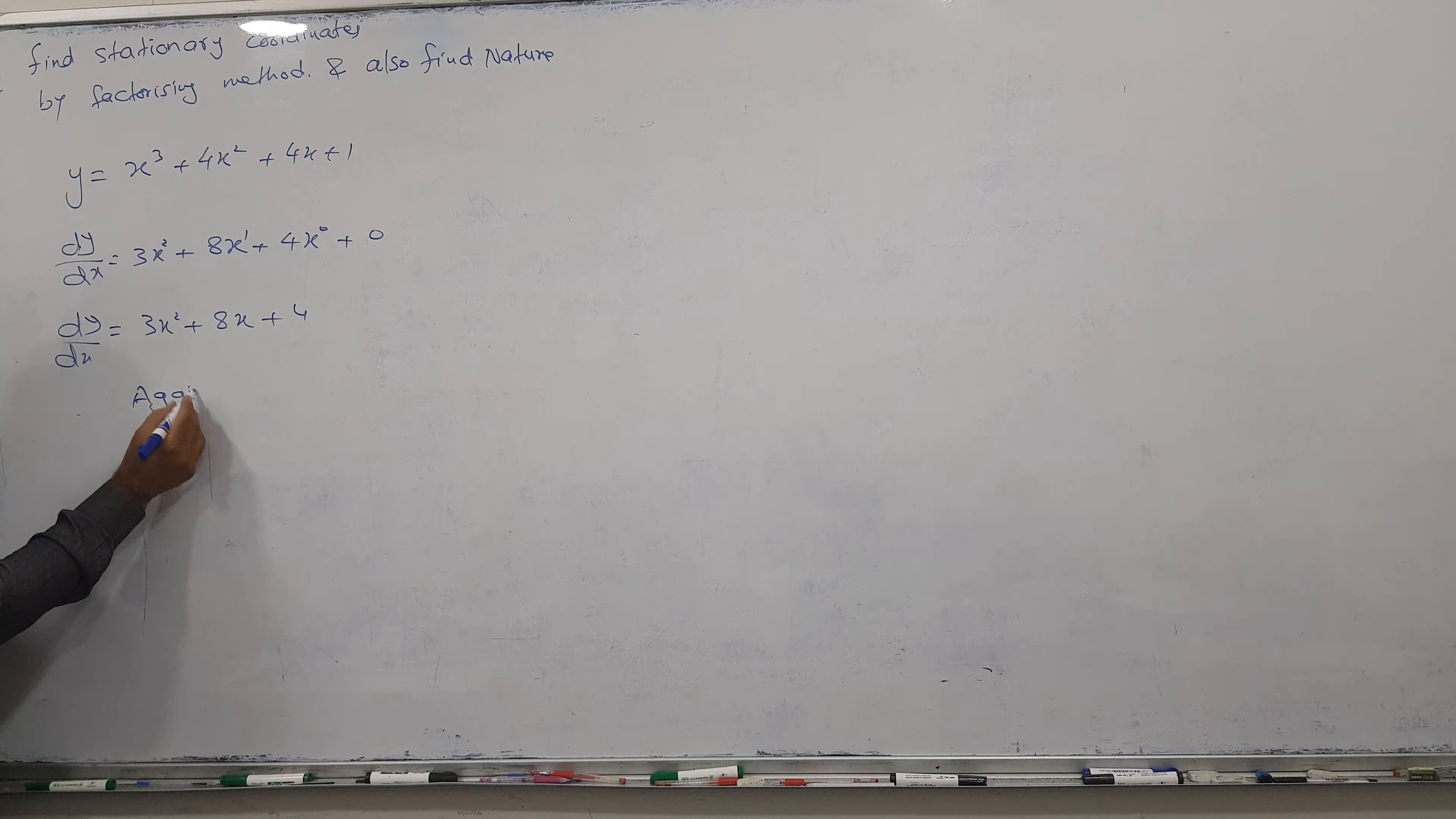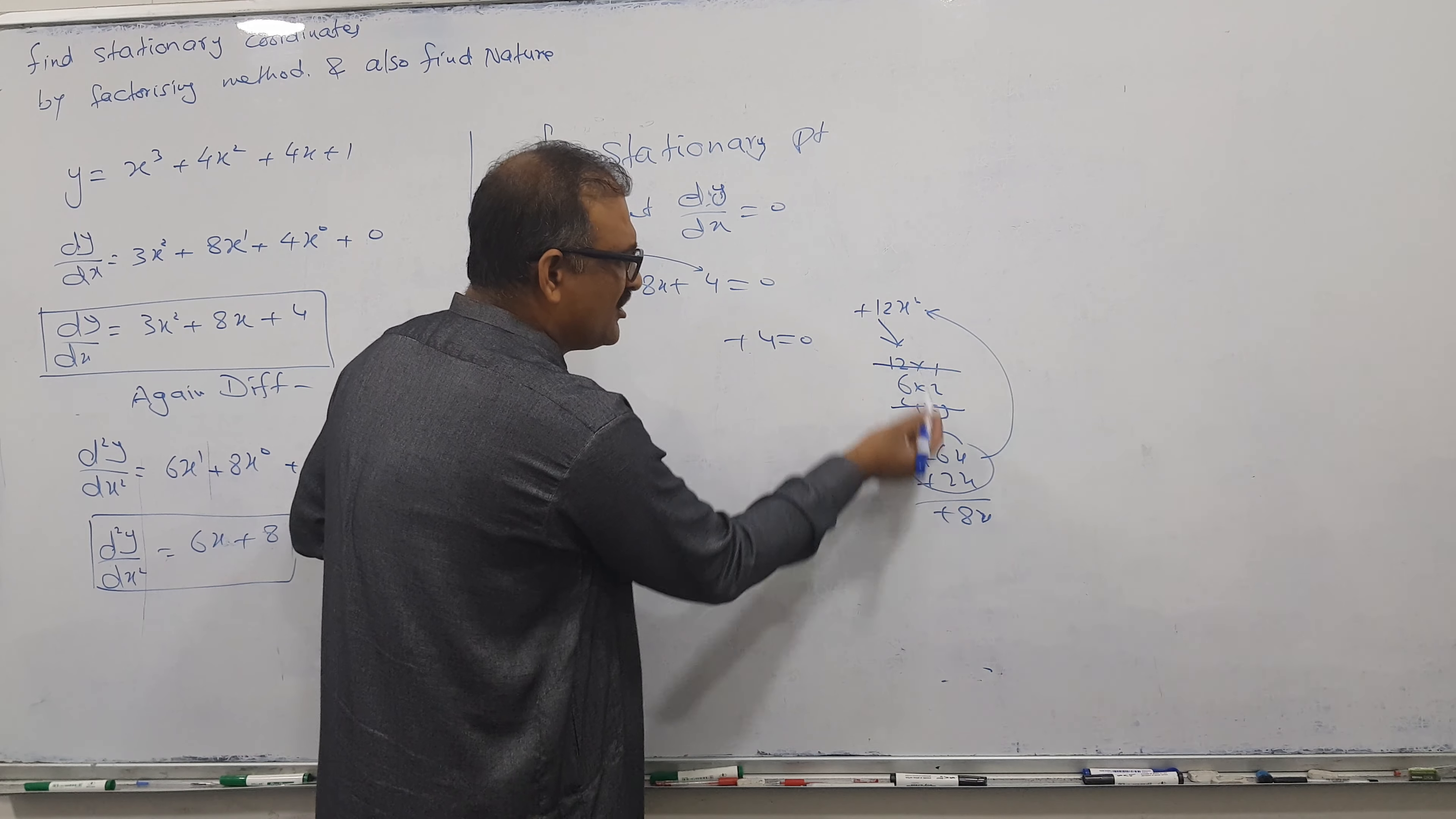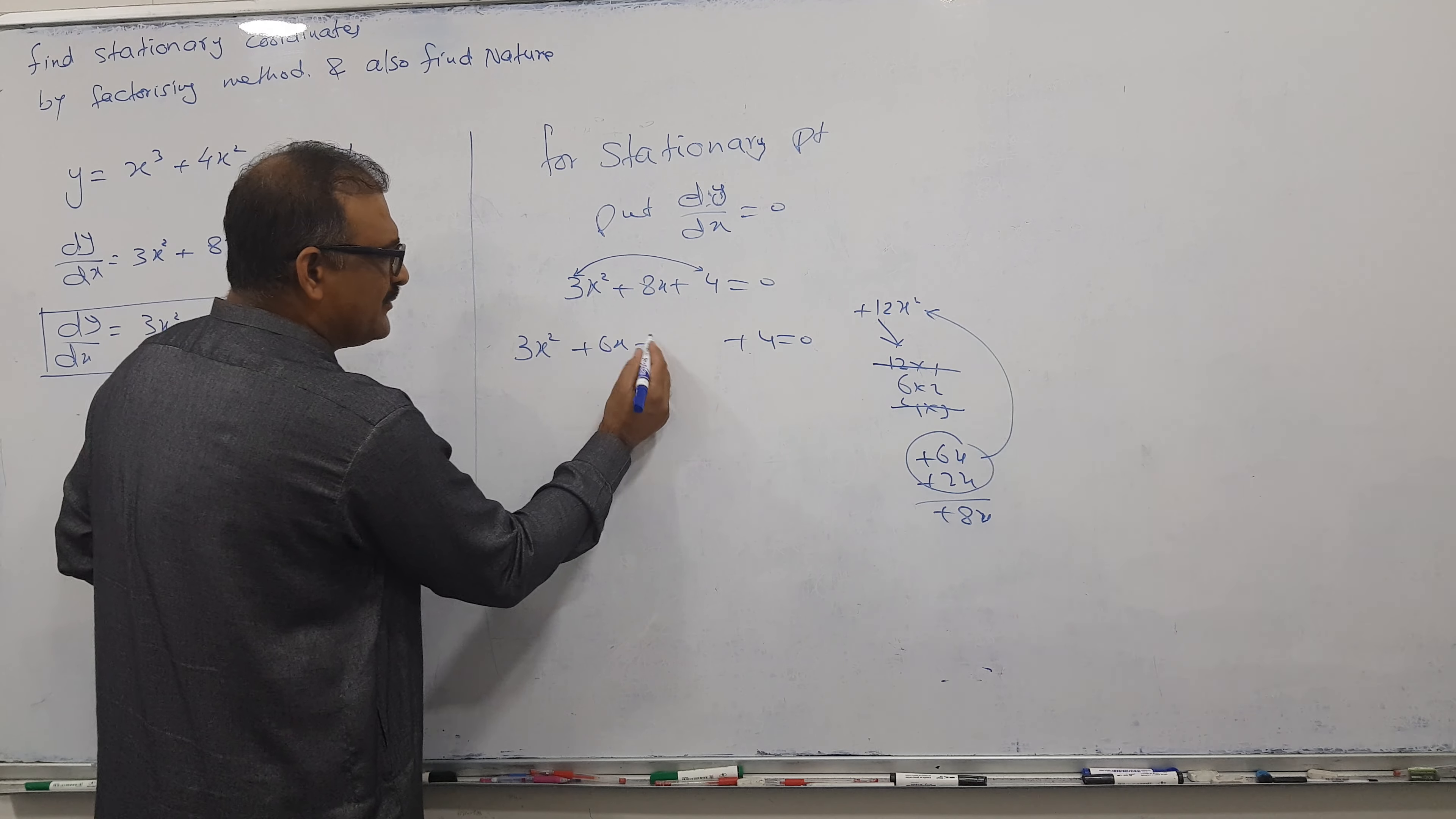This times this multiply we got 12x². How many possible factors for 12? 12 ones are 12, 6 twos are 12, 4 threes are 12. I will check which is more suitable. First copy this and this as is. Which pair gives us 8? This is not possible because 3 plus 1 is 13 and minus 11. This is suitable: plus 6x and plus 2x will give us plus 8. If you multiply these two I must get 12x². So I'm copying 6x + 2x from here.